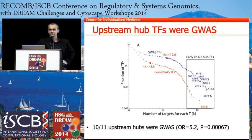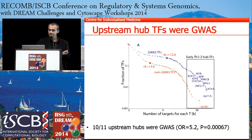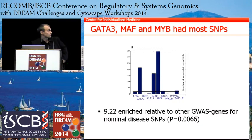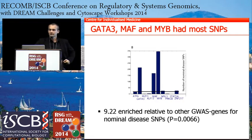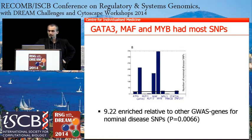We decided to take a closer look at the top 10 hub transcription factors that are differentially expressed early in the process. For each transcription factor, we counted the number of nominally disease-associated polymorphisms — the number of SNPs — rather than simply calling them JIVAS or not. We found that three transcription factors had far more disease SNPs than the others: a nine-fold enrichment for GATA3, MAF, and MYB. So we decided to focus on these three.